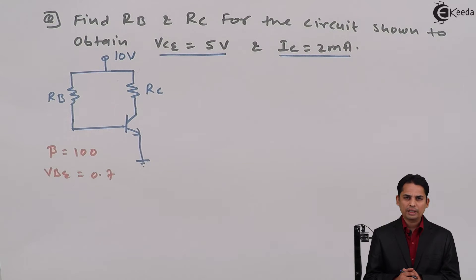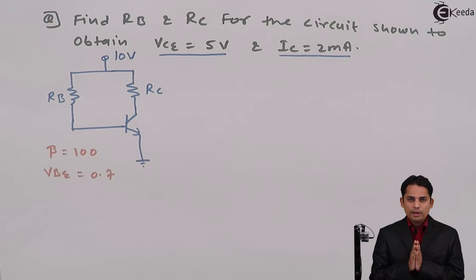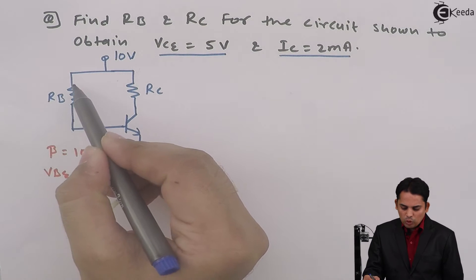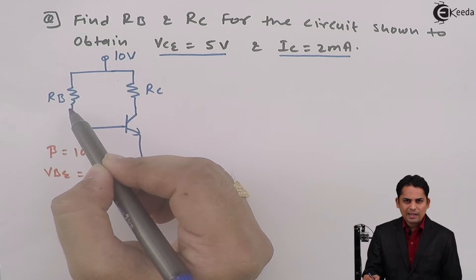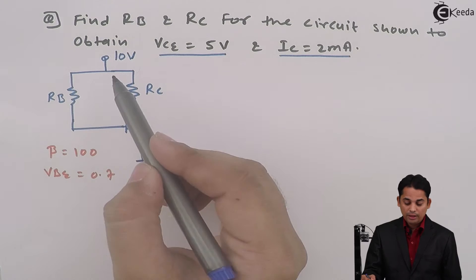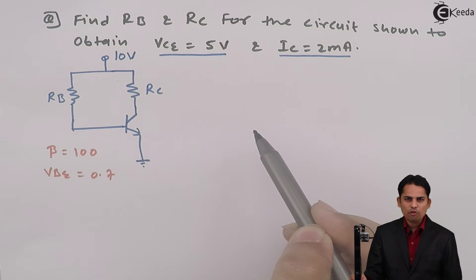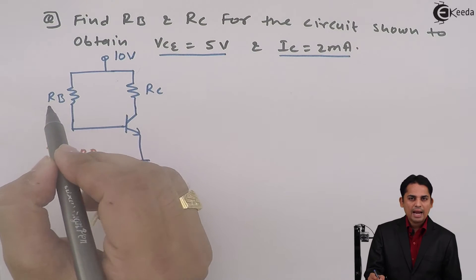But now what we'll do is we'll first find out which equation will help us to find out the value of RB and RC. If I want to find out the value of RB, I need to apply KVL to the input. But in this particular case, the values of IB and RB both are unknown.